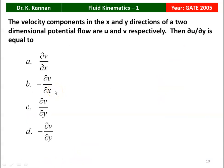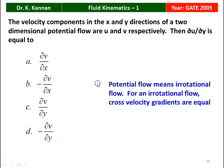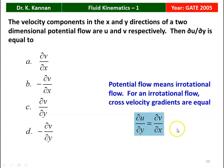Next question from the 2005 question paper. Velocity components in the x and y directions of a two-dimensional potential flow are u and v respectively. Then dou u/dou y is equal to: dou v/dou x, minus dou v/dou x, dou v/dou y, or minus dou v/dou y. The potential flow is irrotational. For irrotational flow, cross-velocity gradients are equal: dou u/dou y = dou v/dou x. So the answer is option A — dou v/dou x.